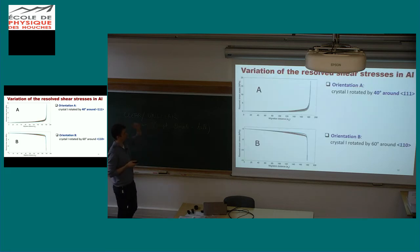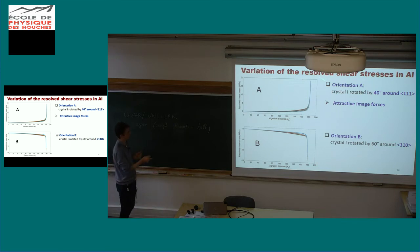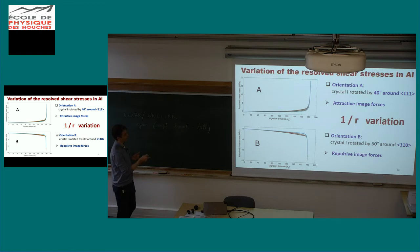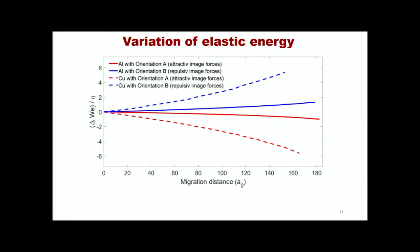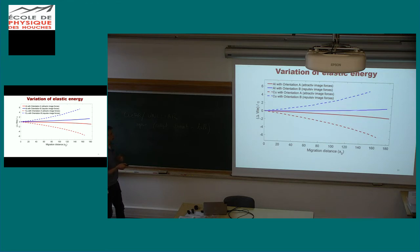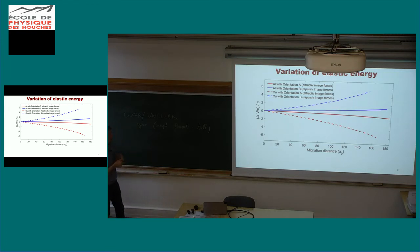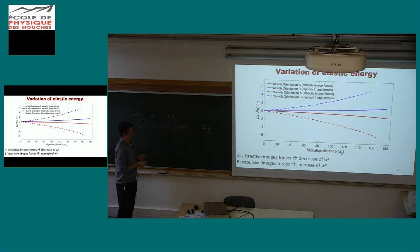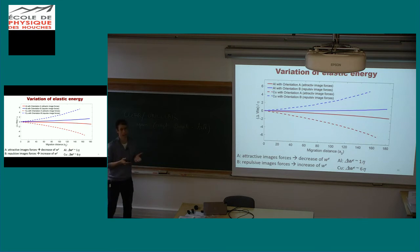We plot the variation of elastic energy divided by the dislocation line energy found in the mesoscopic model versus the migration distance of the grain boundary. When increasing the surface area and the order of the Legendre polynomial, solutions converge, so the general trend is reliable. For orientation A (attractive image force), you have positive resolved shear stress on the dislocation, whereas for orientation B (repulsive image force), you have negative resolved shear stress, with 1/r variations. The variation of elastic energy shows: in dotted lines copper, in full line aluminium; in red attractive orientation gives a decrease of elastic energy, in blue repulsive orientation gives an increase. Our assumption is correct, and the amount of variation is about one dislocation line energy for aluminium and six for copper, which is quite significant.